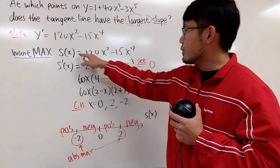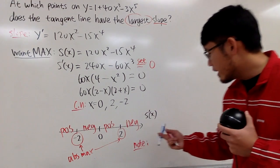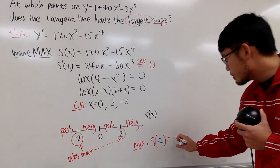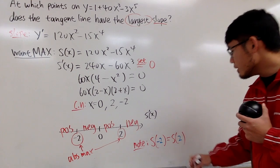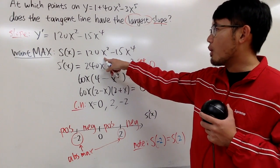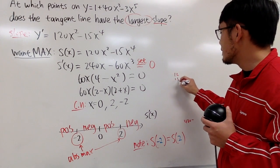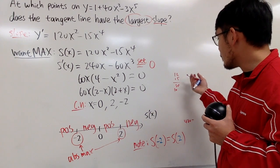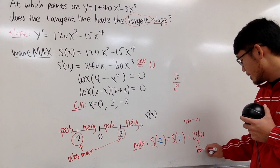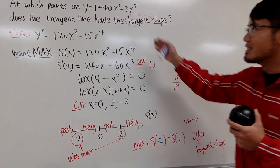You should plug in negative 2 into S(x) — note that S(-2) = S(2). Let's compute S(2): 120(2²) - 15(2⁴) = 120(4) - 15(16) = 480 - 240 = 240. So 240 is the biggest slope you can get on the original curve.